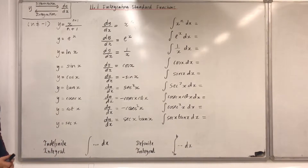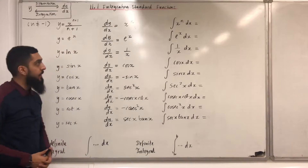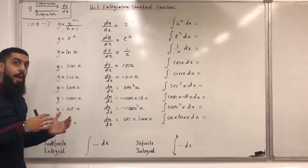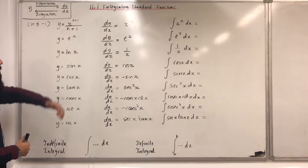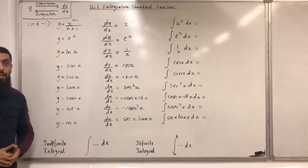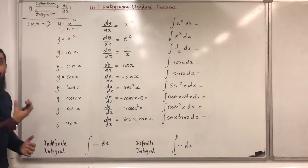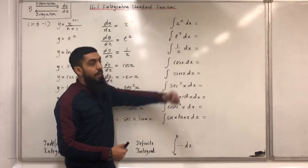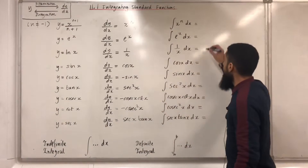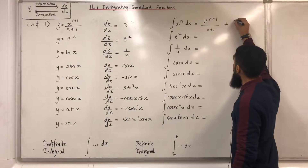Let's have a look at some crispy integrals. The first one: the integral of x to the power n with respect to x. If I look over here, I've got dy/dx equal to x to the power n, which gives us y equal to x to the power n+1 divided by n+1, provided that n is not equal to minus 1. The procedure of going from dy/dx back to y is called integration. Therefore, the integral of x^n with respect to x will be x^(n+1) divided by n+1 plus c.